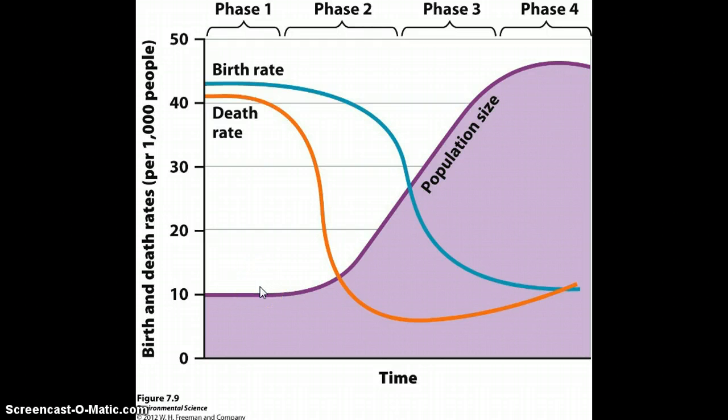As the country transitions in the transitional phase towards becoming more industrialized, the birth rate remains high, but the death rate declines because they have better hygiene available, better nutrition, and improvements in education. So during that time, you're going to have very rapid population growth.